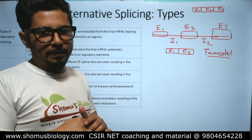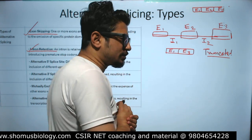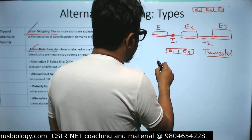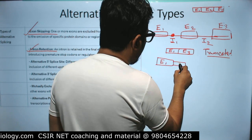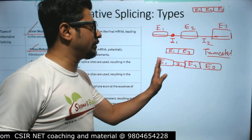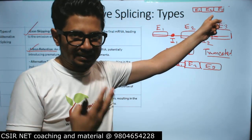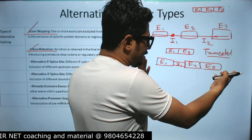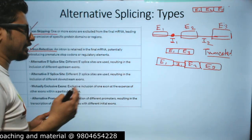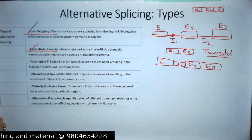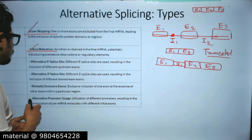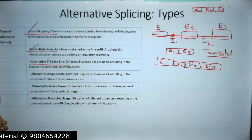The second type is intron retention. Generally, introns must be clipped out, but if an intron carries an intronic splicing enhancer element, the result includes E1, then intron 1, then E2, then E3. This longer form of RNA generates a different variety of protein — a lengthier protein — if the intron sequence is read as a coding region during translation.